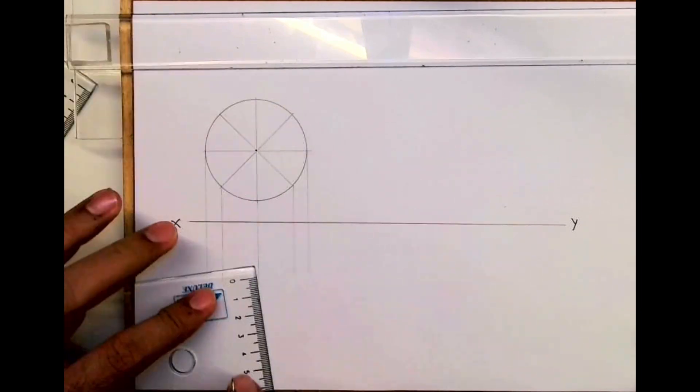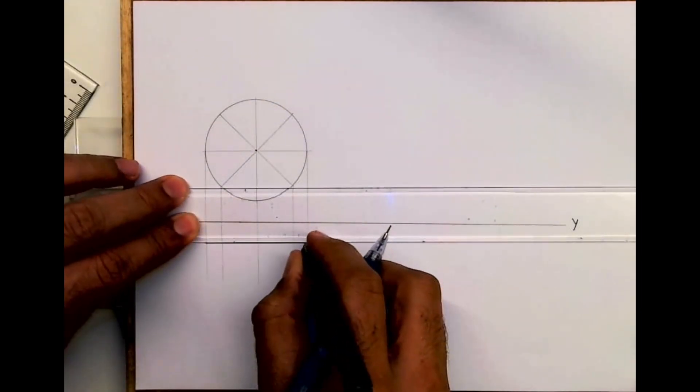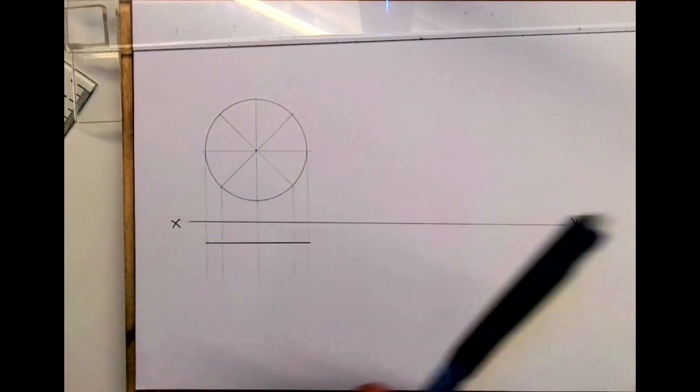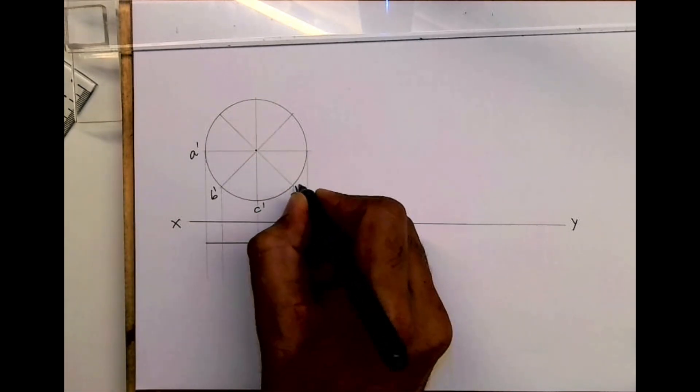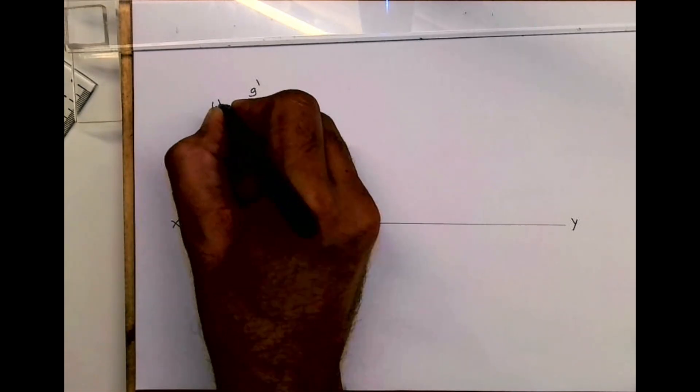This is front view and top view. I can write naming: A, A dash, B dash. Now, why are we dividing circle into 8 parts? So we get points, which makes it easier for us to draw the next view.